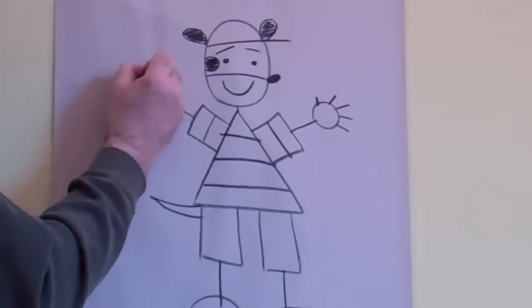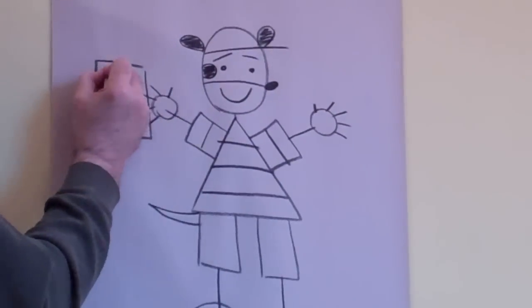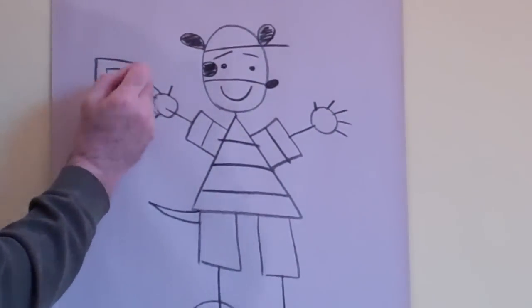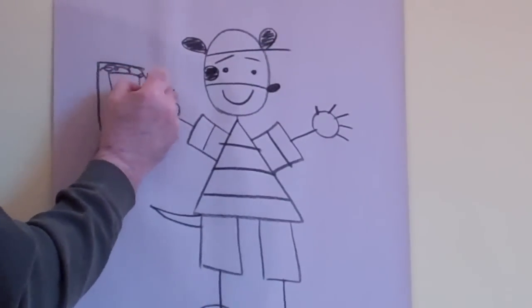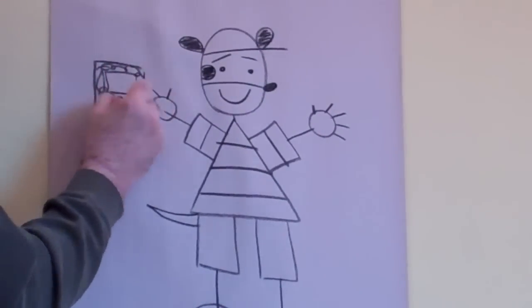To make his journal, make a rectangle. Another one inside it. And to make it look like a notebook, you just scribble. Scribble, scribble, scribble, scribble. It's fun to scribble.